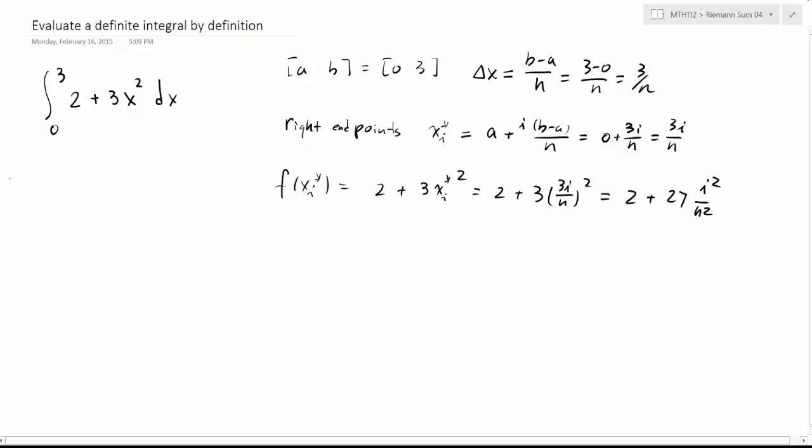Now according to the definition, this definite integral is the limit when n goes to infinity, the partition becomes finer and finer. And then we have this sigma, i goes from 1 to n. It's the sum of approximate areas of those stripes, and we have base times height, delta x times f of xi star. So we plug in the values we have: n going to infinity, sigma i from 1 to n, and then we have 3 over n times (2 plus 27i squared over n squared). That's the setup.